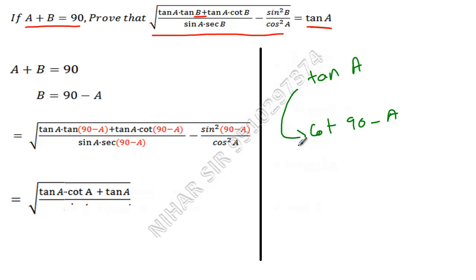Now if I have tan A and if I want to convert this into cot, then it will be cot(90 minus A). It means cot(90 minus A) has been derived from tan A, so I will substitute tan A.